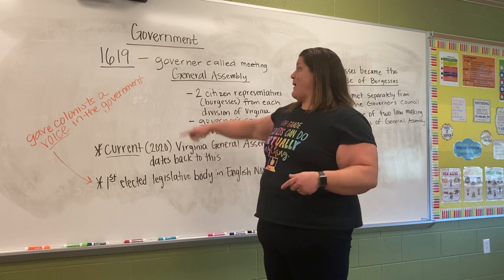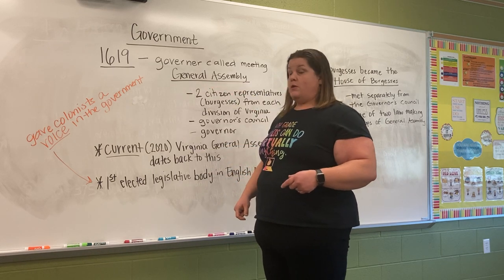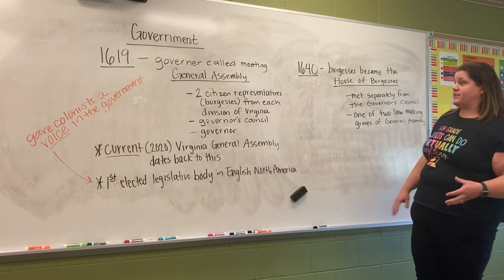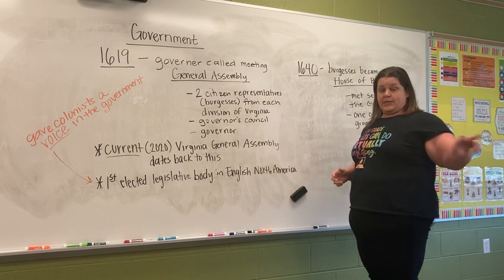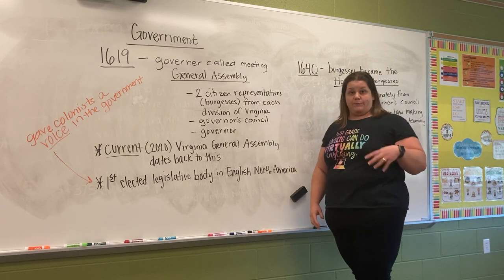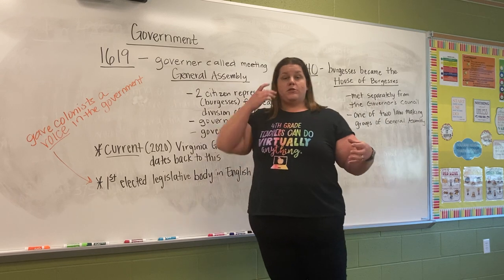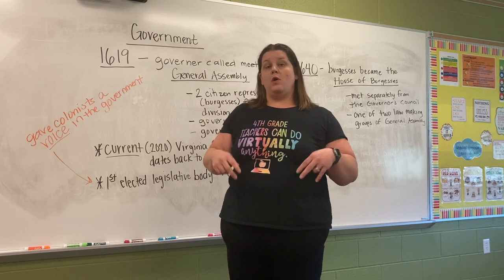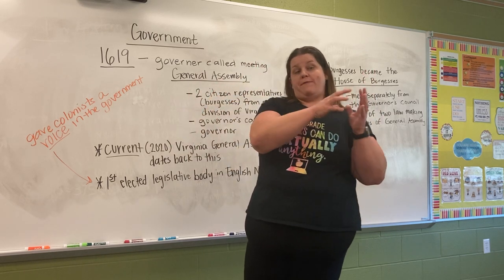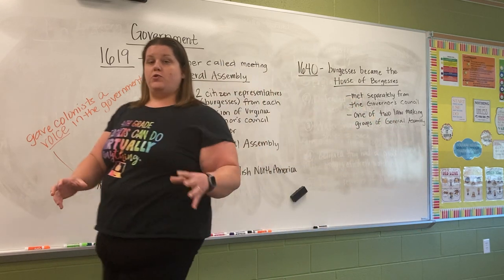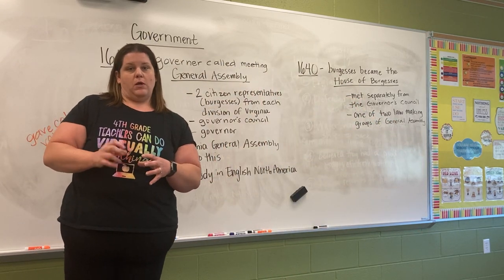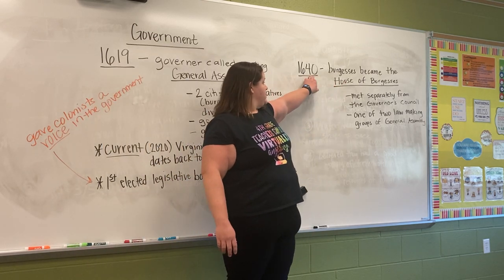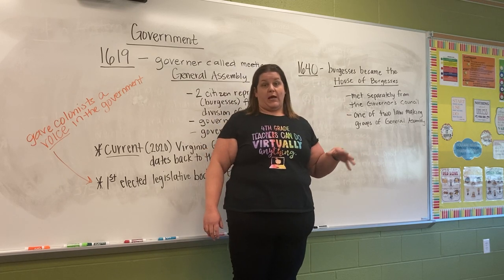This is very important — our current General Assembly in Virginia in 2020 dates back to this General Assembly. The other piece you need to know is that in 1640, the burgesses — the citizen representatives — broke off to become the House of Burgesses by themselves. We still have the governor and the governor's council, but now there are two separate governing bodies. It would be like at school having Miss Griffin and the staff working together separately from all the students working together in their own council.